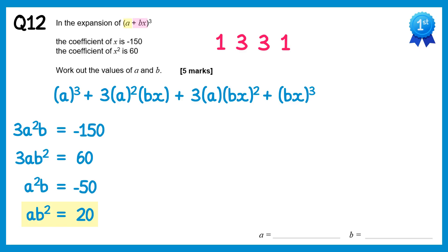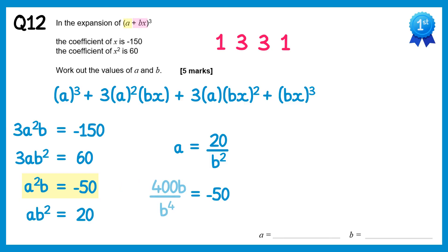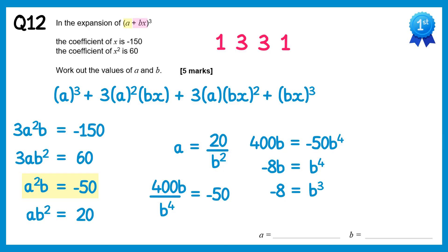To solve simultaneously, rearrange the second equation to make a the subject: a equals 20 over b squared. Substitute into the first equation: (20/b²)² times b equals negative 50. Squaring gives 400/b⁴, times b gives 400b/b⁴. Multiplying both sides by b⁴: 400b equals negative 50b⁴. Dividing by negative 50 gives negative 8b equals b⁴, then dividing by b gives negative 8 equals b cubed. Cube rooting both sides gives b equals negative 2.